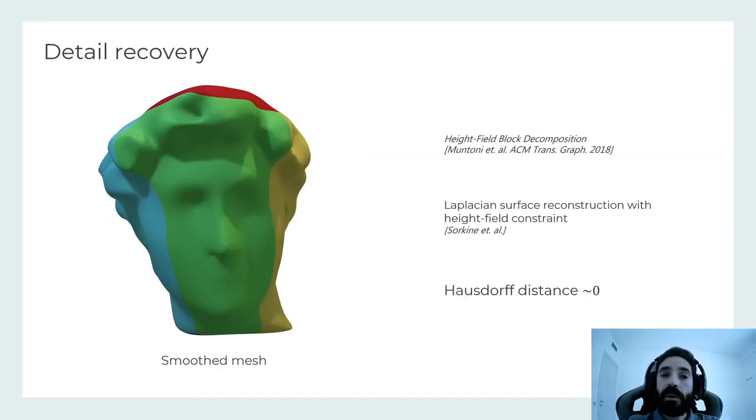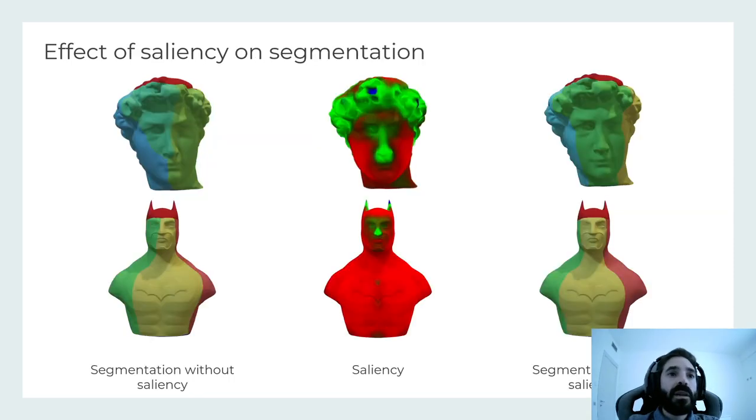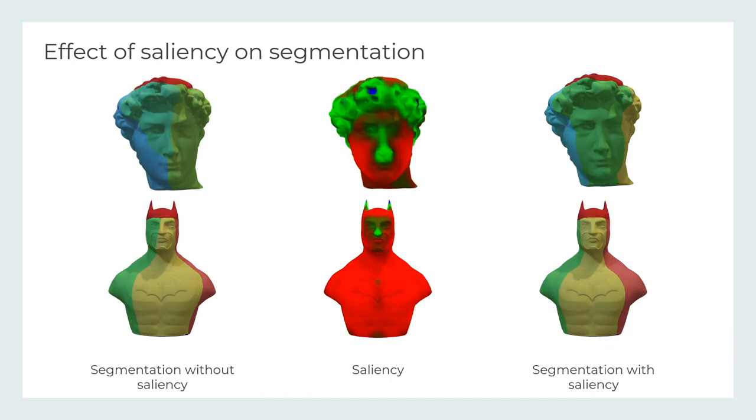At the first step of the pipeline, we can optionally remove frequency details of the shape. In case we perform this operation, we use the same approach as Muntoni et al. for reintroducing details while enforcing the height field constraint. The resulting shape is very close to the original, with high Hausdorff distance approaching zero. In the following images, we can see how the saliency term favors formation of boundaries in areas with low details, guaranteeing high quality fabrication in regions.